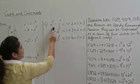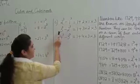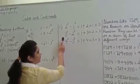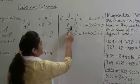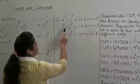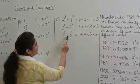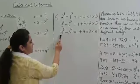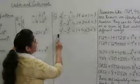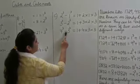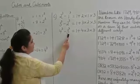Next is 3 cubed minus 2 cubed. 2 and 3 are two consecutive natural numbers, and what you see here is the difference between the cubes of two consecutive natural numbers. Similarly, 4 cubed minus 3 cubed — 3 and 4 are two consecutive natural numbers.